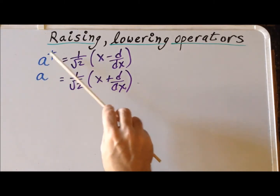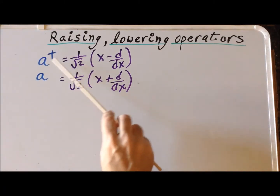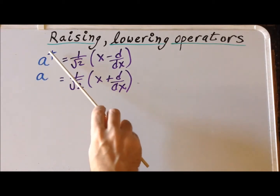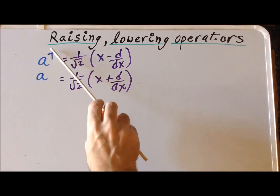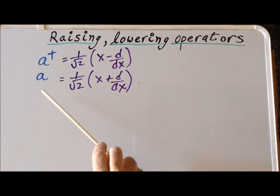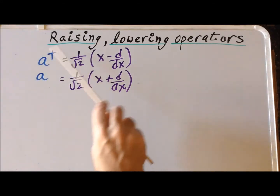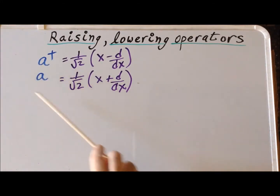As a reminder, this symbol here that I'm trying to emulate is called a dagger. It looks somewhat like a cross except that the lower portion is longer than the top portion. This is the symbol for the raising operator, and there is no superscript for the lowering operator.